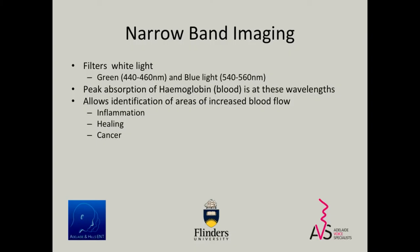Essentially you're filtering white light. White light has all the colours in it, and you filter it so that you have the green and the blue, which is where the peak absorption of haemoglobin is. That enhances visualisation of the mucosal and submucosal microvascular patterns. The blue is at 415nm and the green at 540nm, corresponding to the peak absorption of haemoglobin — it has a bimodal absorption.